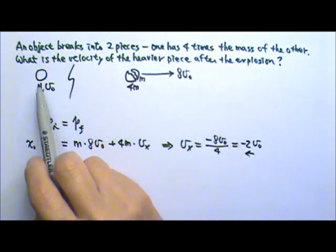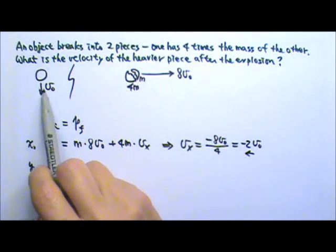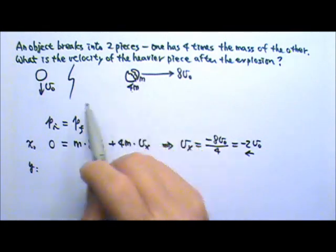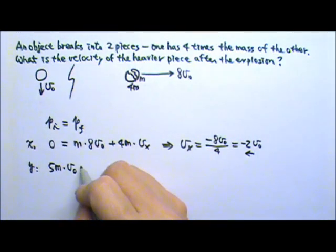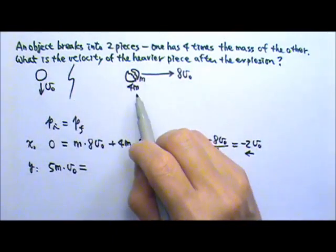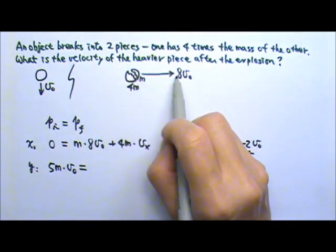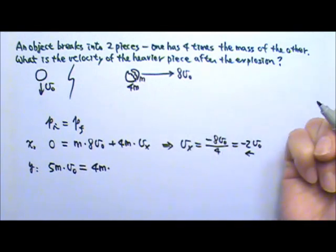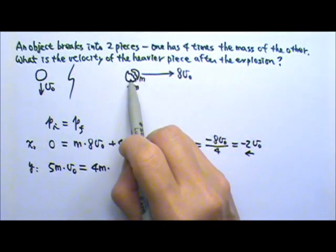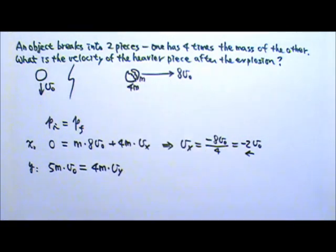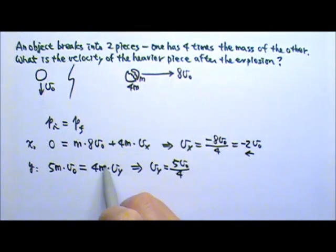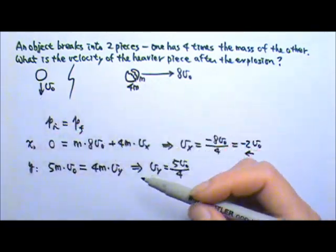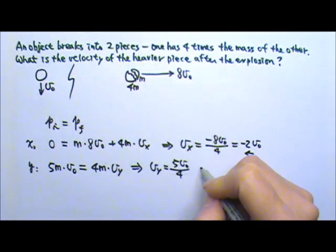Now let's look at the y-direction. The initial y-direction momentum is not zero. Since the object breaks into m and 4m, the original piece must have a mass of 5m. The velocity is V0 in the y-direction, so that is the initial momentum in the y-direction. At the end, the 1m piece does not have any momentum in the y-direction, but the 4m piece may have y-direction momentum Vy. This gives us Vy equal to 5V0 divided by 4, directed downward.